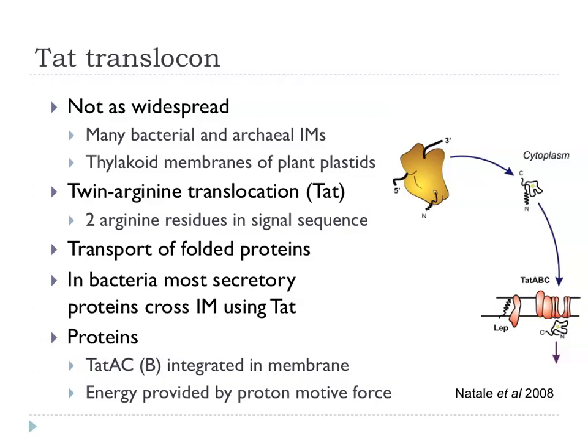TAT takes its name from an abbreviation of Twin-Arginine Translocation. If you look in the signal peptide, you find this pair of adjacent arginine residues as a characteristic sequence motif for this system. It's not always required — sometimes you get lysines instead of arginines — but generally it is that kind of very polar residue seen there.